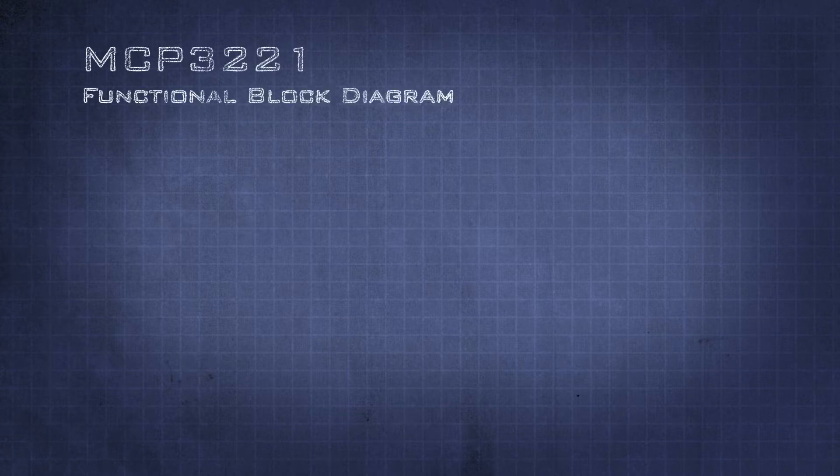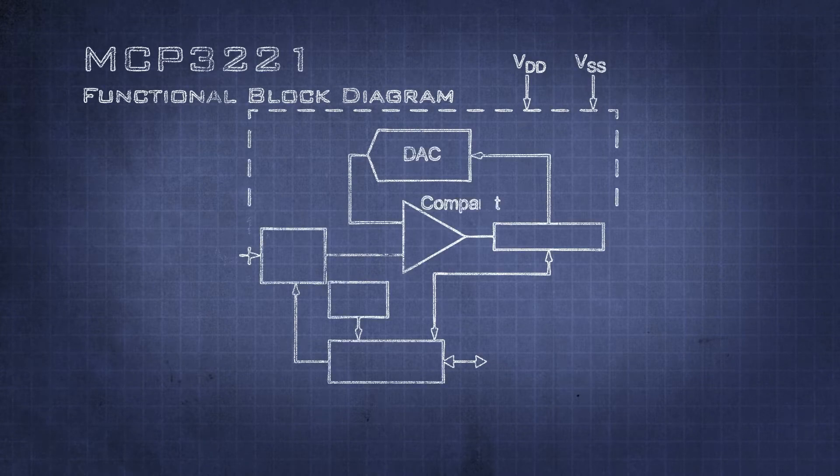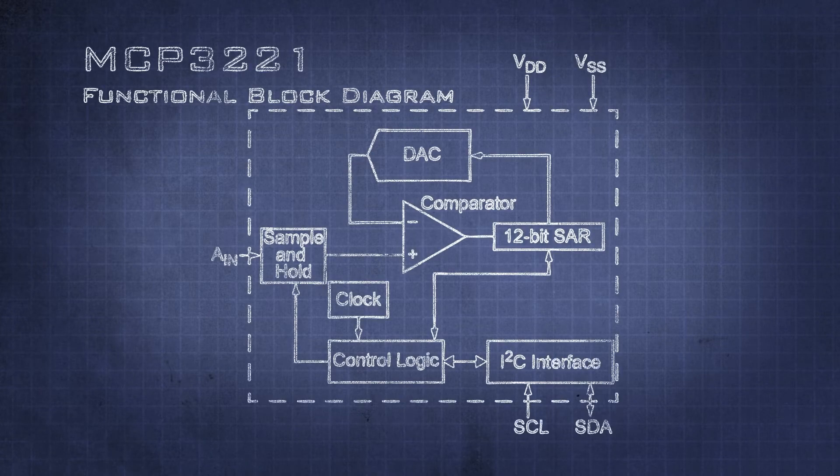Looking at the MCP3221 which is a single channel 12 bit I squared C ADC, we can see in the block diagram that the core to how most ADCs work is by generating a voltage from a DAC and comparing this to an input voltage. It's pretty funny that we need a DAC to make an ADC.